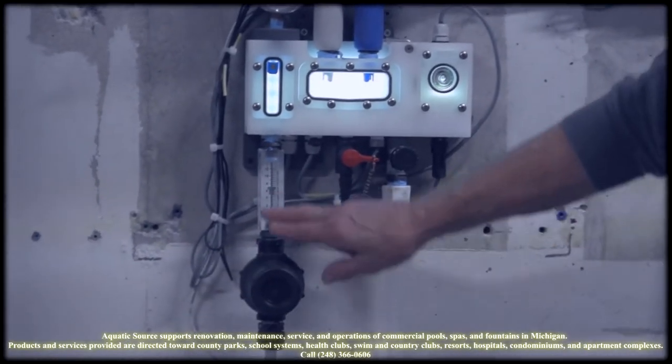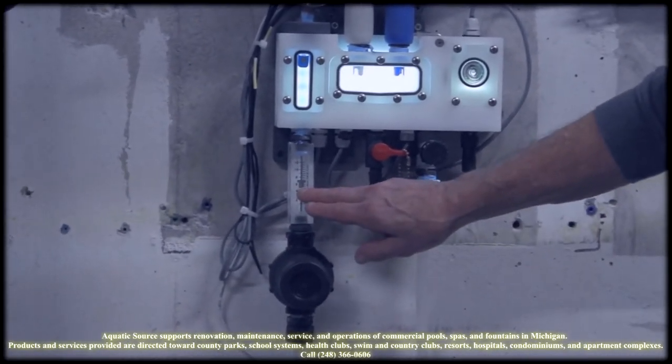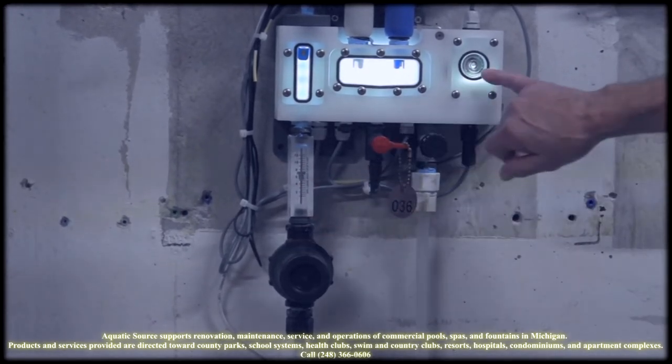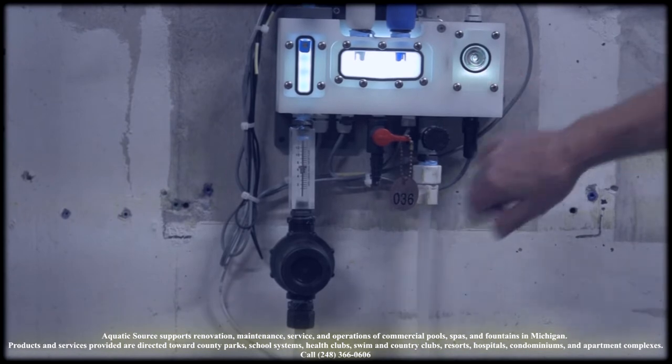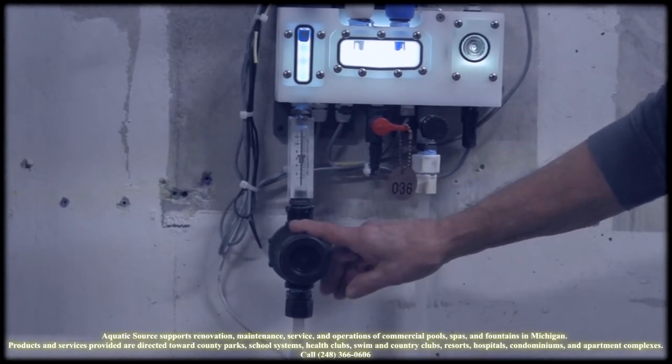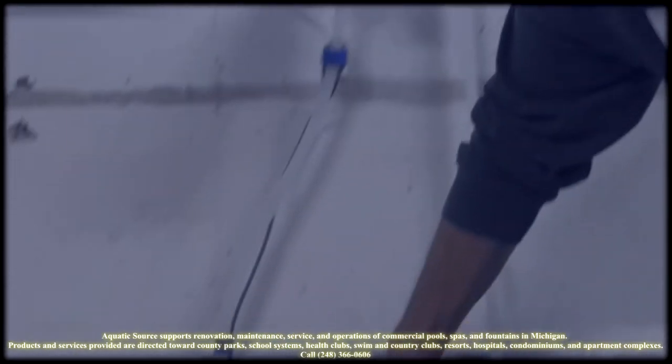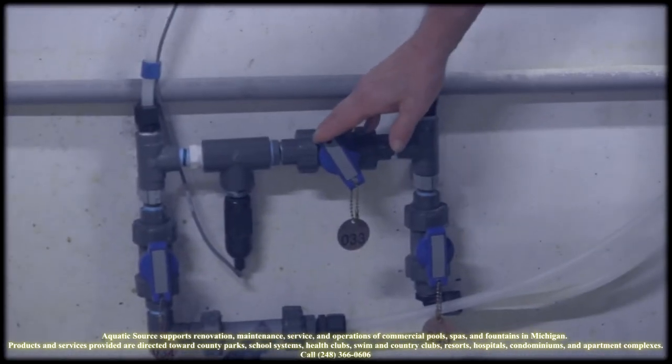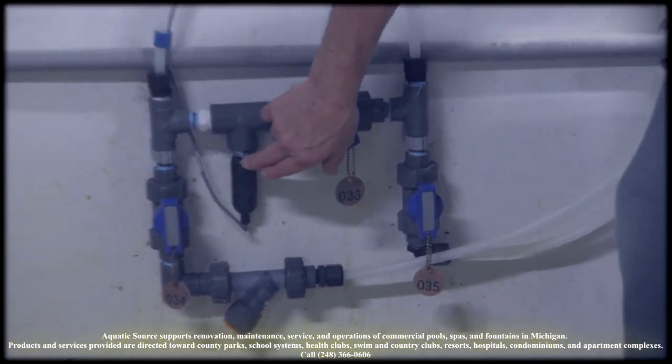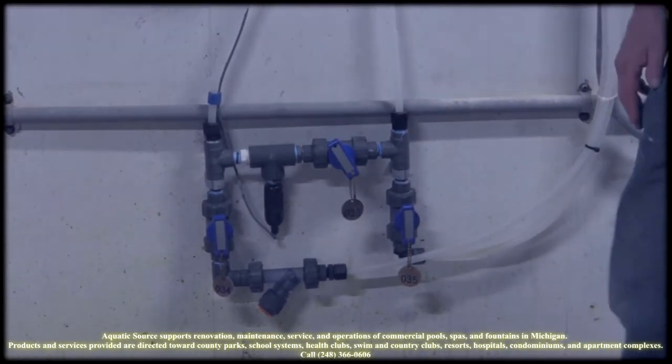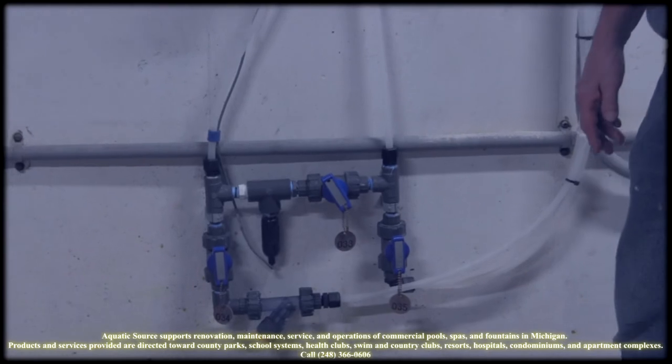We have the flow meter so that we can keep it between six to eight gallons on here, so that we don't exceed the flow rate through the CP1 probe. We have the Y strainer to prevent any debris from getting into the probe or the flow cell. We also have, in this bypass loop, a TDS sensor. It'll sense all the total dissolved solids from the chlorine or anything else in the water.